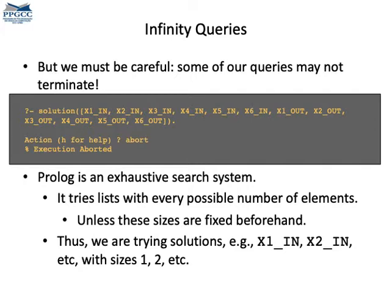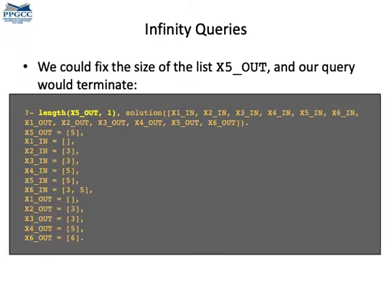In this case, it will not terminate. It's enough to fix the length of some of those lists, and then we get a solution. For instance, here, I'm saying that the outside of x5 must have exactly one element.